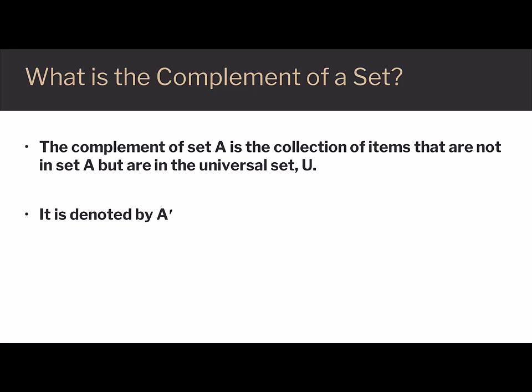The complement of set A is the collection of items that are not in set A, but are in the universal set U. It's denoted with a hash mark after the A, and it's sometimes read A prime or A complement.